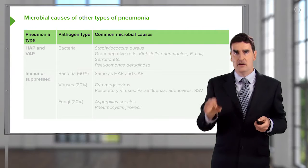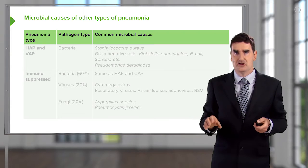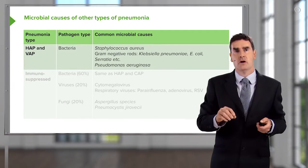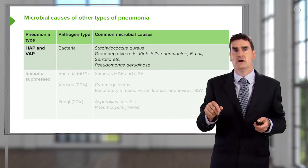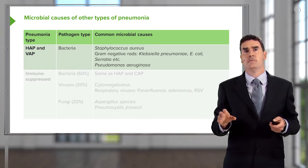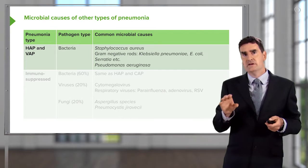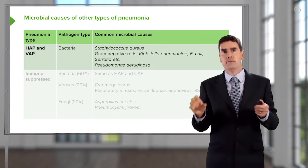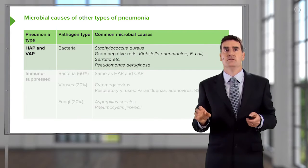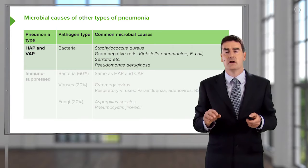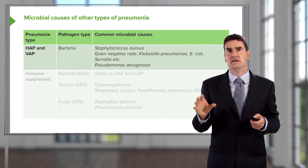As mentioned earlier, there are other types of pneumonia: hospital-acquired, ventilator-acquired, and immunosuppressed pneumonia. The reason why we define these as separate to community-acquired pneumonia is that the infected organisms are going to be different.